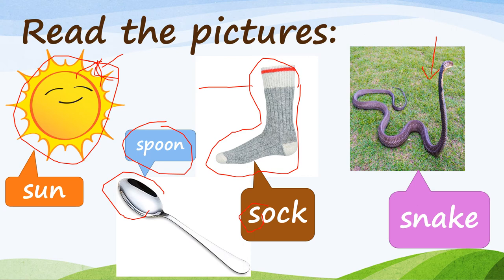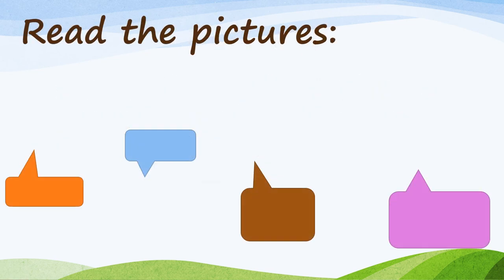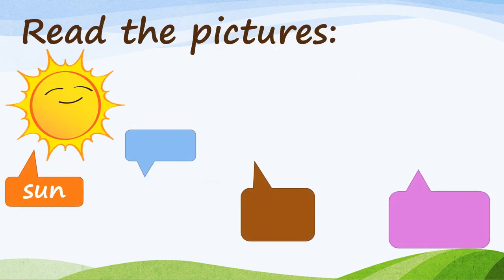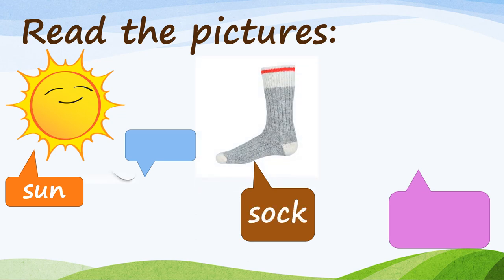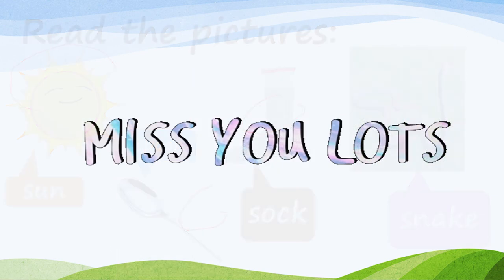So these are some words that begin with letter S: sun, sock, spoon, and snake. Very good! For today's activity, I want you to take a video of yourself reading the words that begin with letter S — there is a sun, a sock, a spoon, and a snake. Read all four pictures. Thank you for today, that's all — miss you a lot guys, see you!